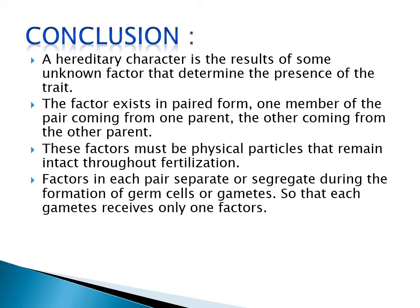Coming to the conclusions, hereditary characters are the result of some unknown factors that determine the presence of a trait. These factors exist in paired form — one member of the pair coming from one parent, the other from the other parent. These factors must be physical particles that remain intact throughout fertilization. Factors in each pair separate or segregate during the formation of germ cells or gametes, so that each gamete receives only one factor.